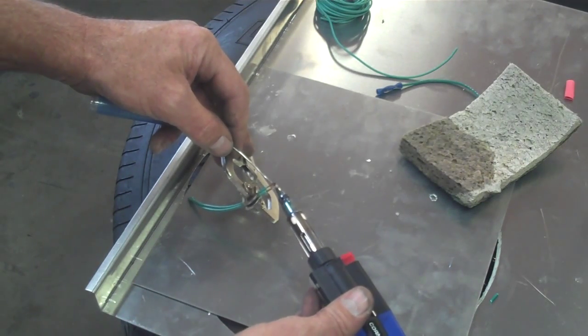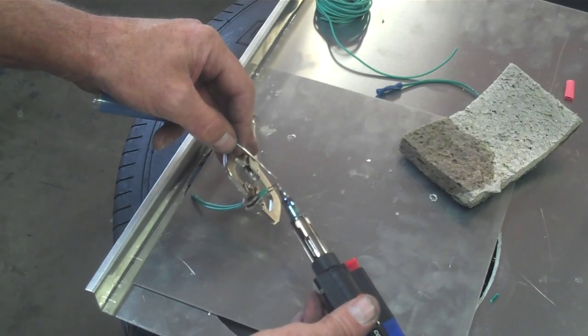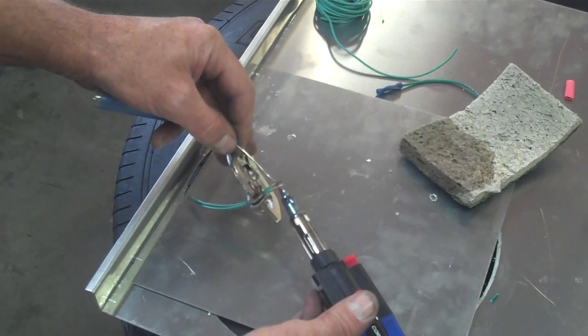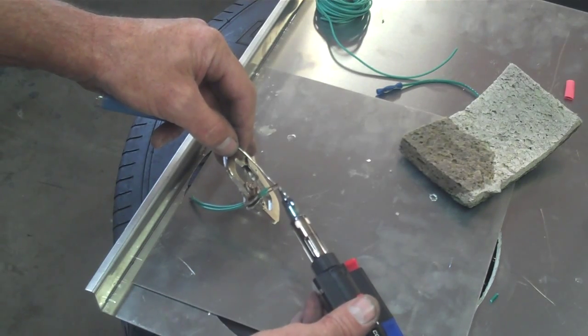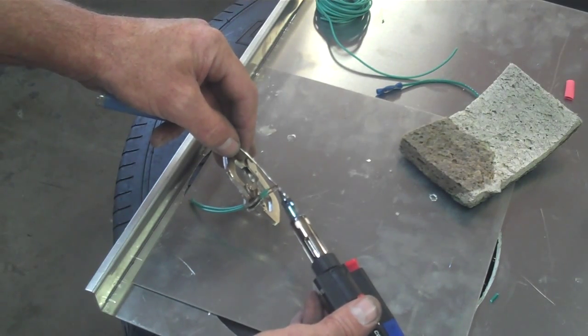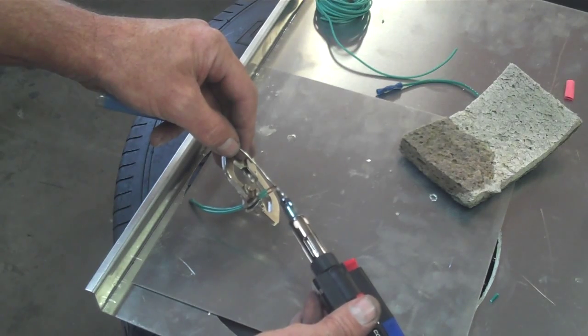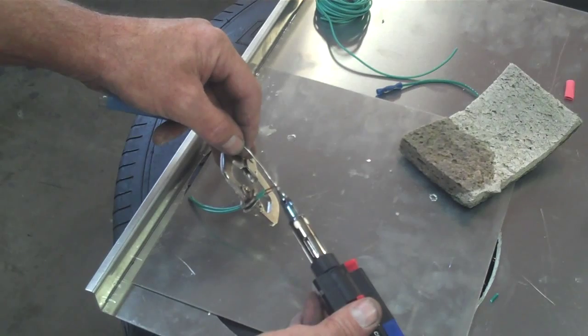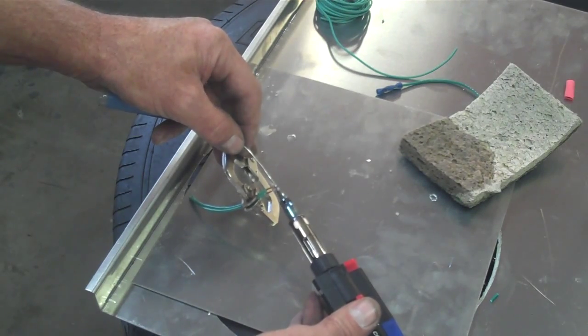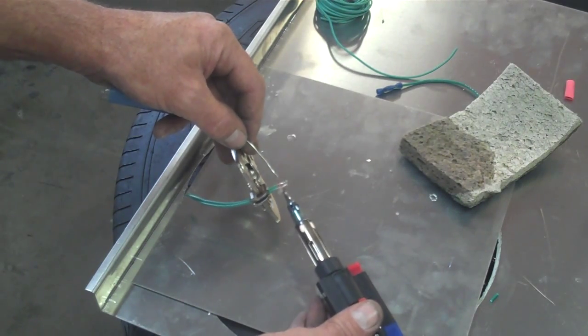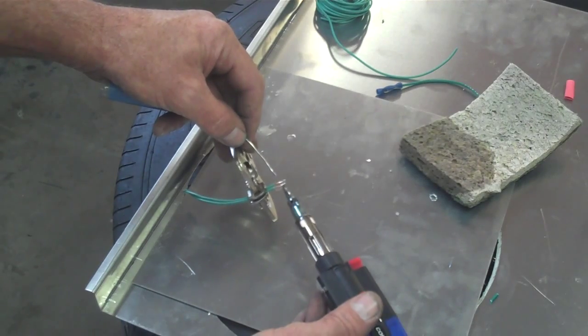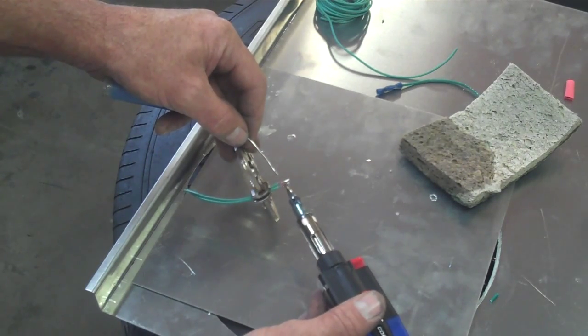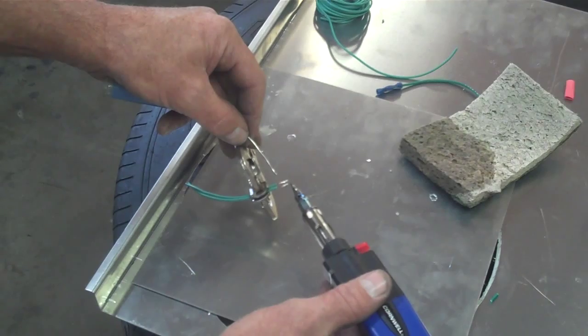This is called tinning. And what this does is places a little bit of solder on the wire, makes it easier for solder to flow. Okay. Now, it looks like both of these wires have a little bit of solder in place.